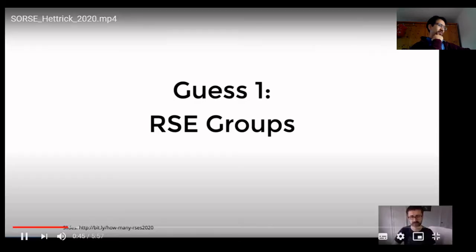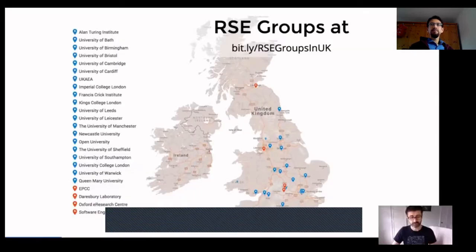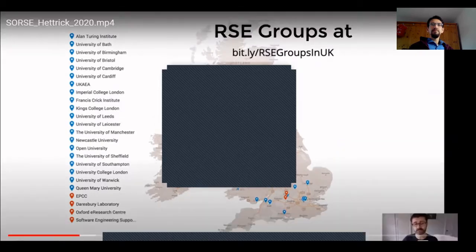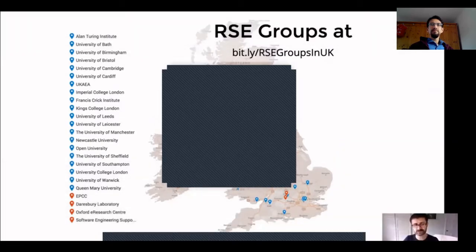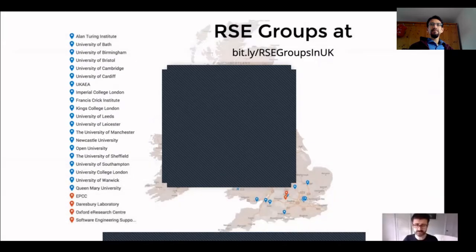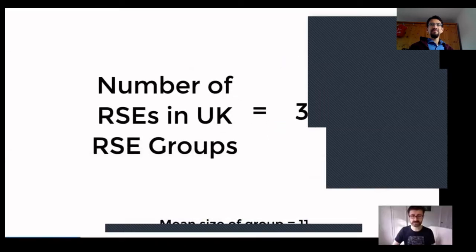I'll start by looking at people we know are research software engineers — RSEs who work within RSE groups, just within the UK. RSE groups have been very successful: we started with the first one at UCL in 2013, and we now have groups at 29 different universities, the most recent being the University of Exeter. At the start of this year, I talked to 25 RSE group leaders and collected some stats. I've concluded that in UK RSE groups there are 324 RSEs — so there are definitely more than this in the world. This is our new base level.